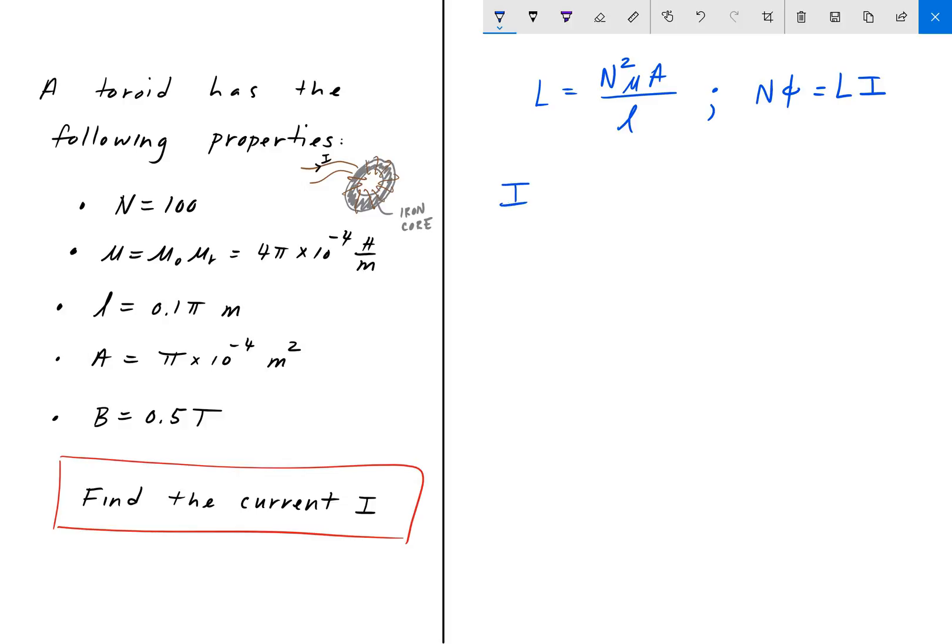So we can solve for I here. I is equal to N·flux divided by L. And we can plug in L. So that's N·flux over N²μA divided by L.